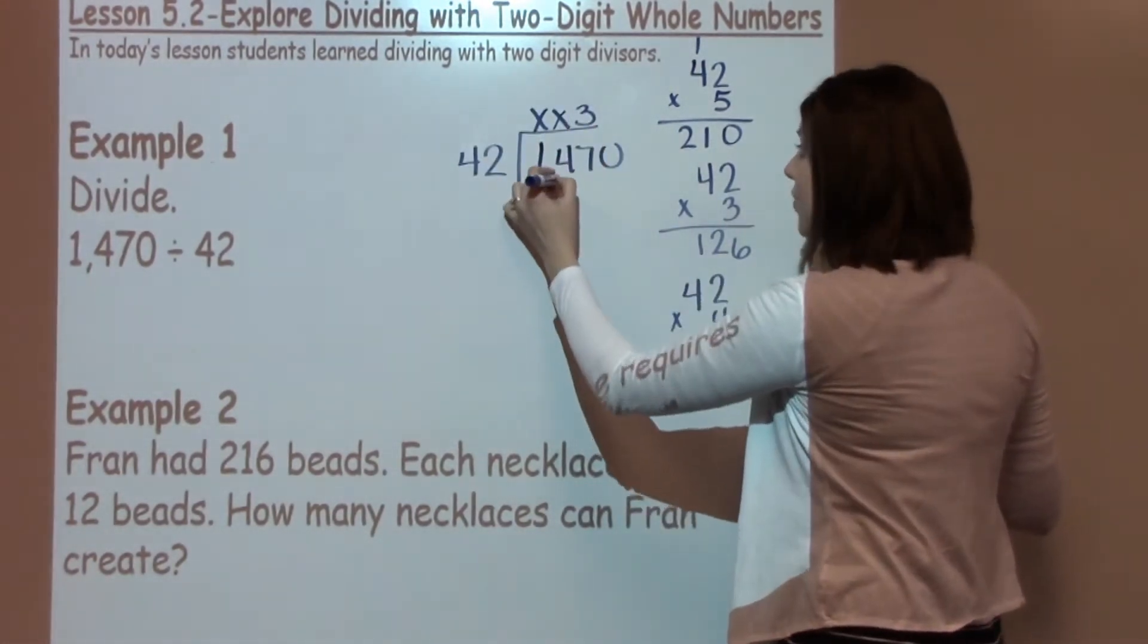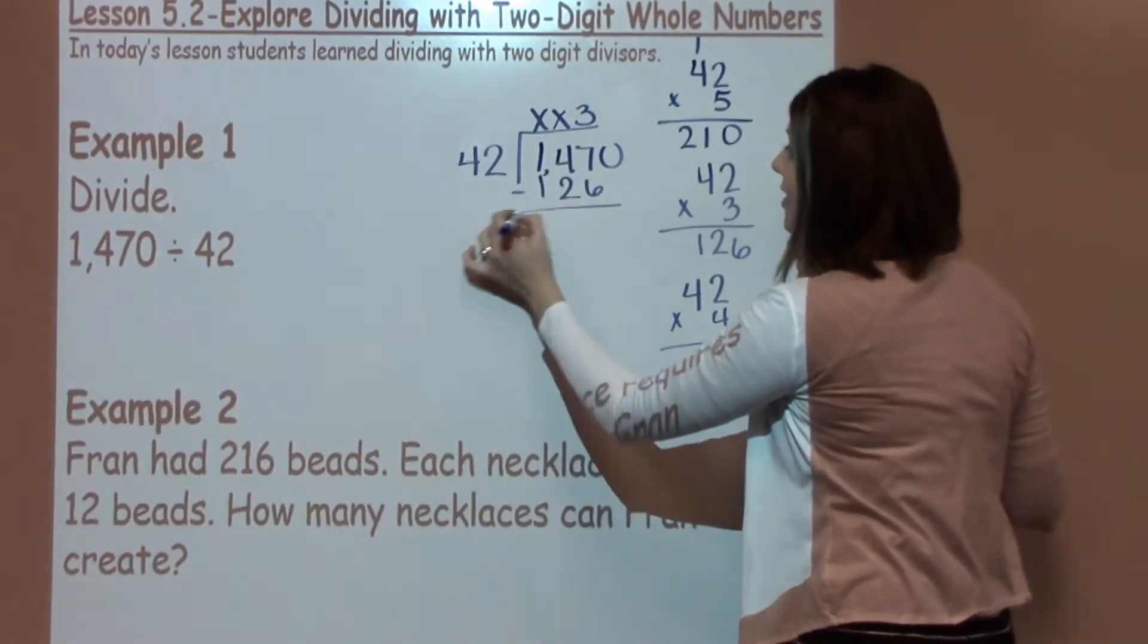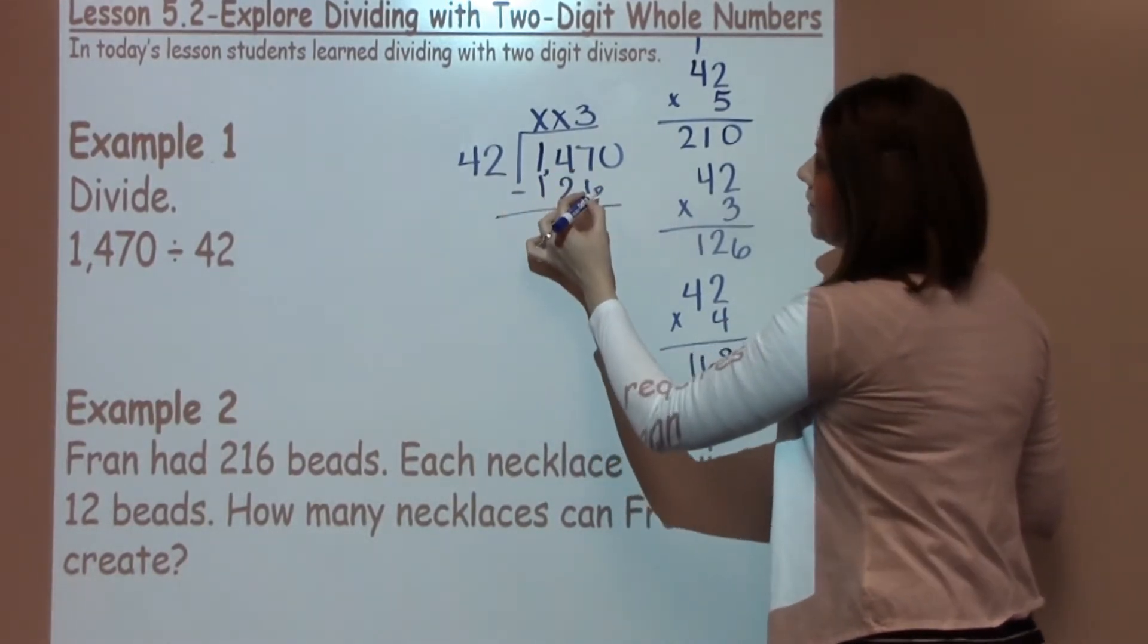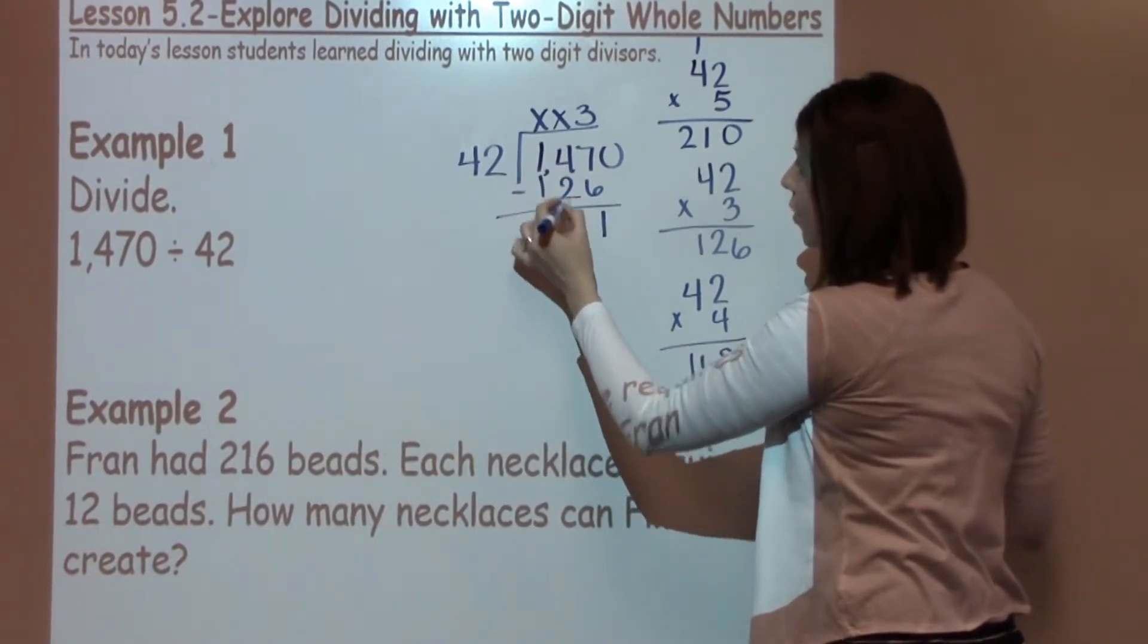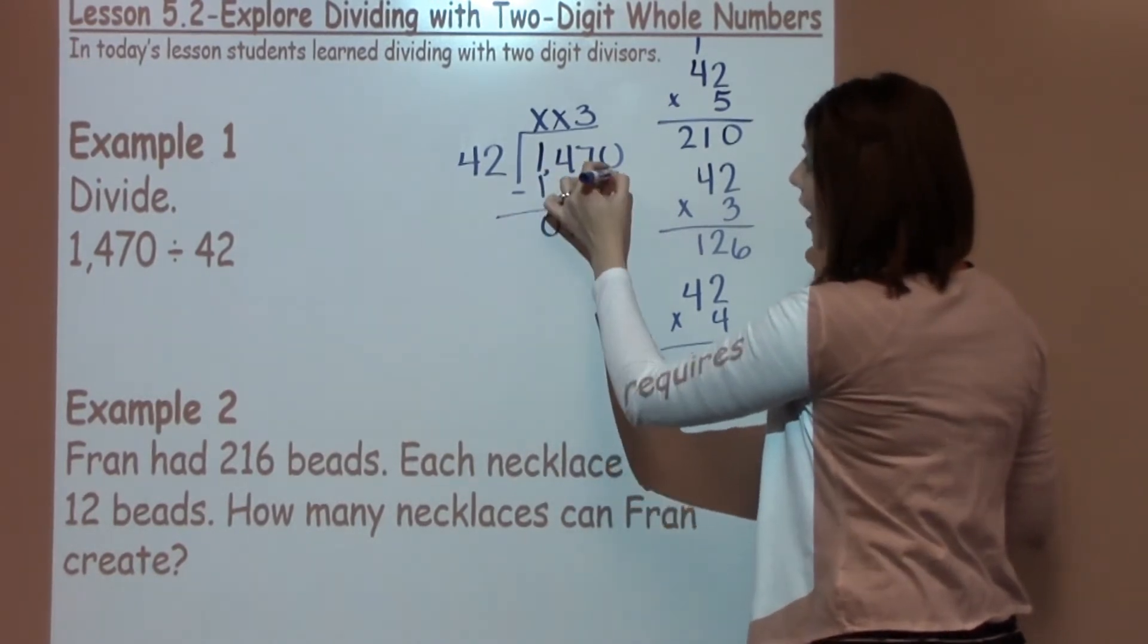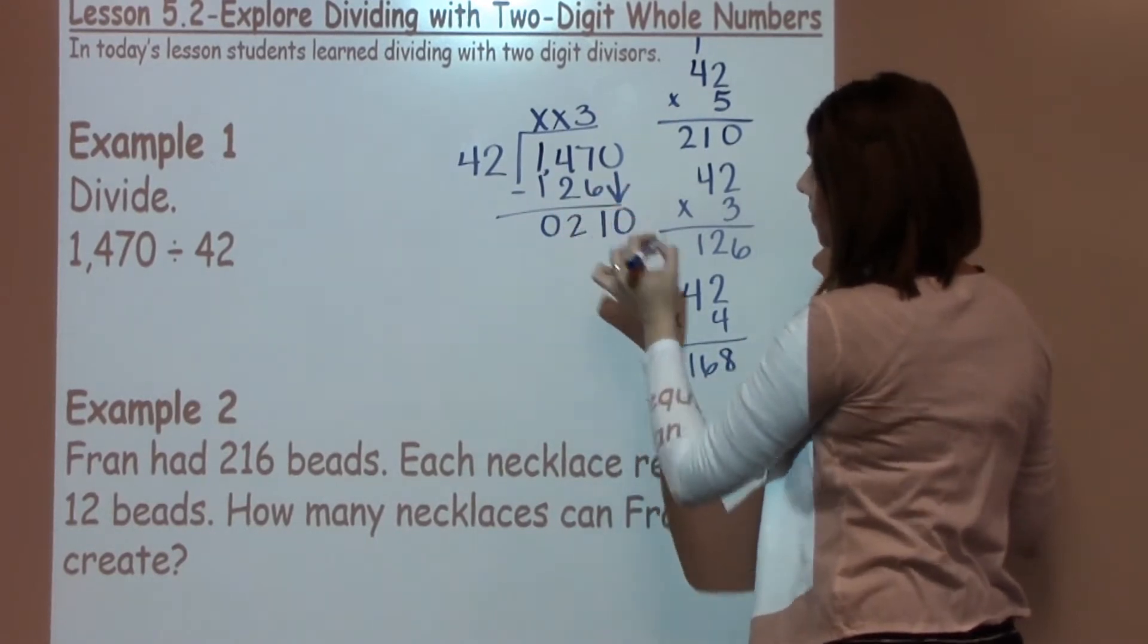3 times 42 is 126. I'm going to go ahead and subtract: 7 minus 6 is 1, 4 minus 2 is 2, 1 minus 1 is 0, and I'm going to bring down my 0.